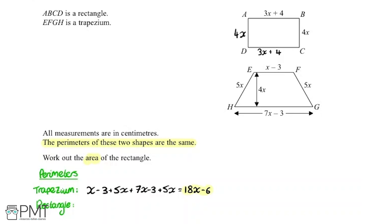In the same way as before we're going to add it all up. So we've got 3x plus 4 plus 4x plus 3x plus 4 plus 4x. And again like we did last time we're going to collect like terms. So we've got 3x plus 4x plus 3x plus 4x, which gives us 14x.